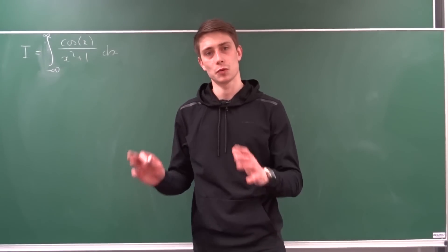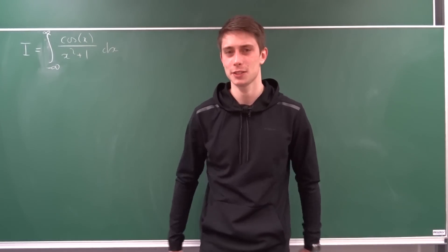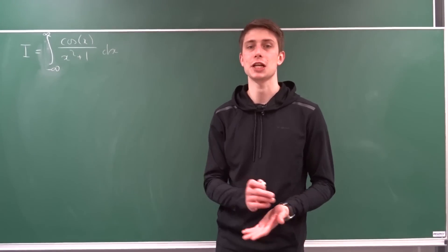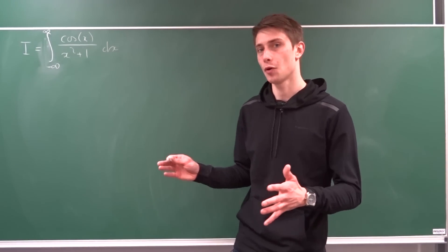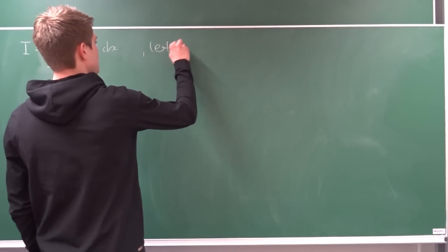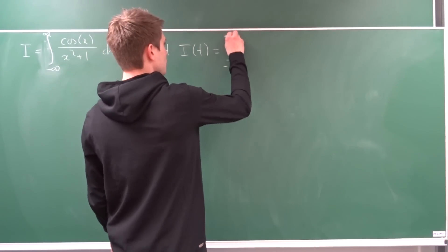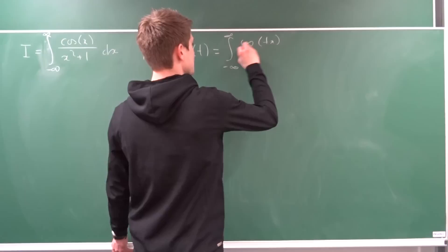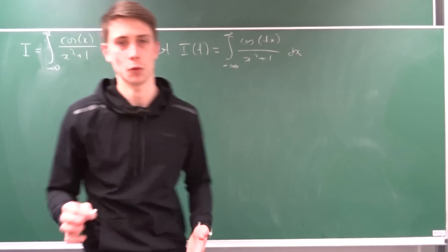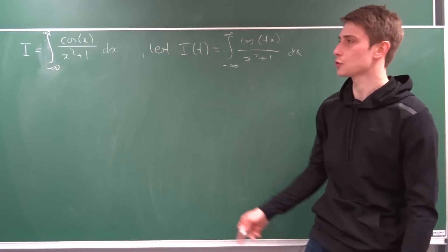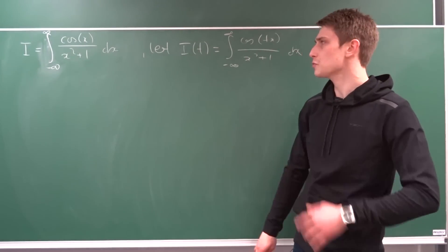Once again we are back at this problem and we want to solve it using the Leibniz rule for integration — some people like to call it Feynman integration. We are going to do differentiation under the integral sign. We introduce a new integral: I(t) equals the integral from minus infinity to infinity of cosine(t·x) over (x² + 1) dx. If we let t equal 1, we get the original integral.